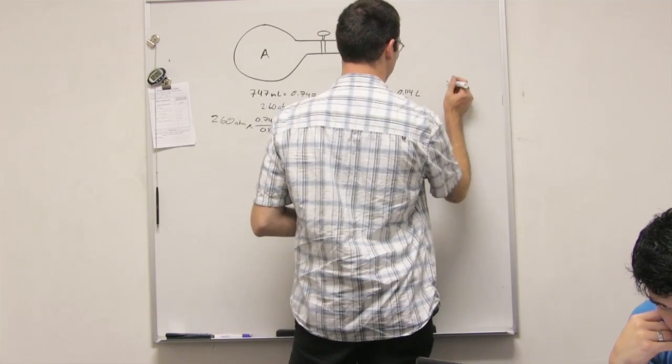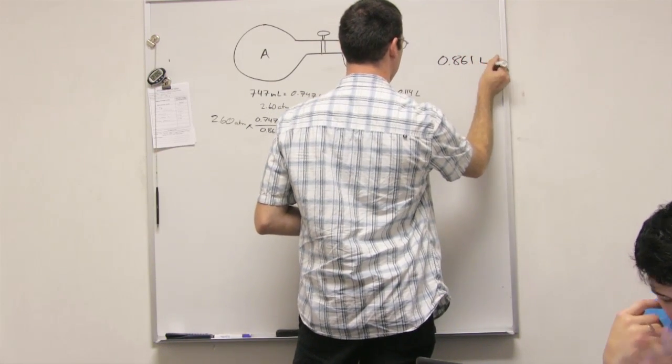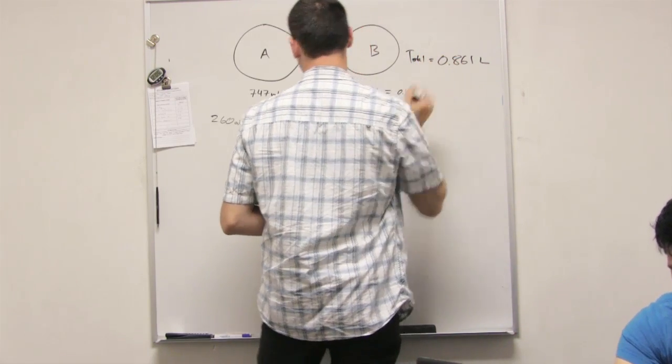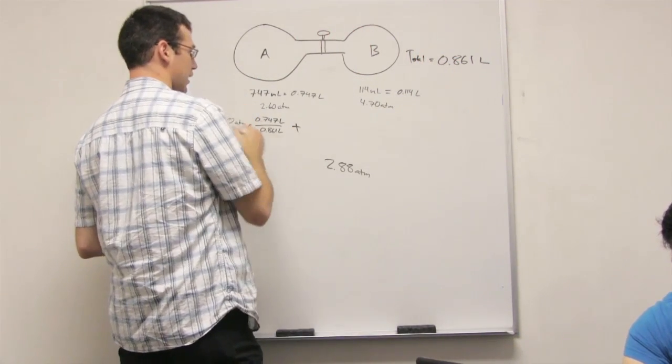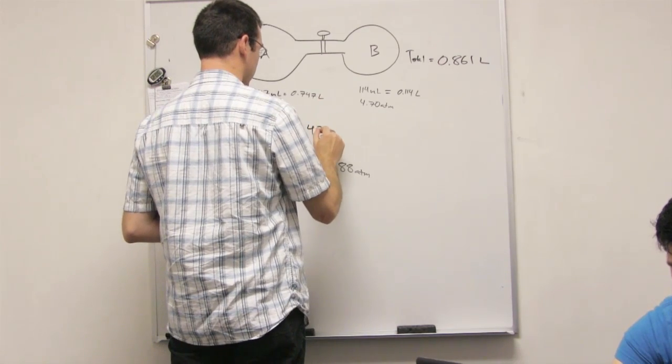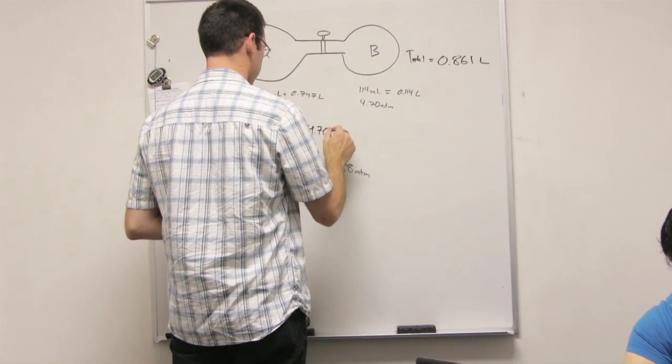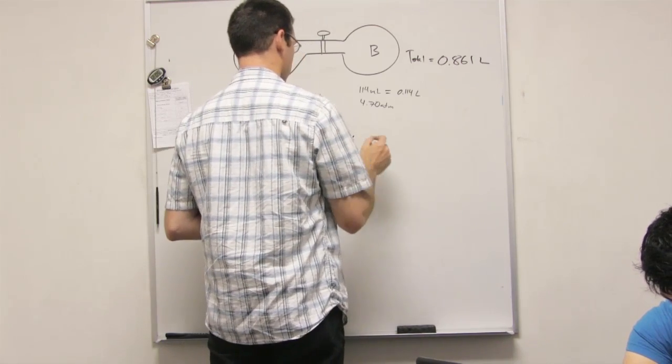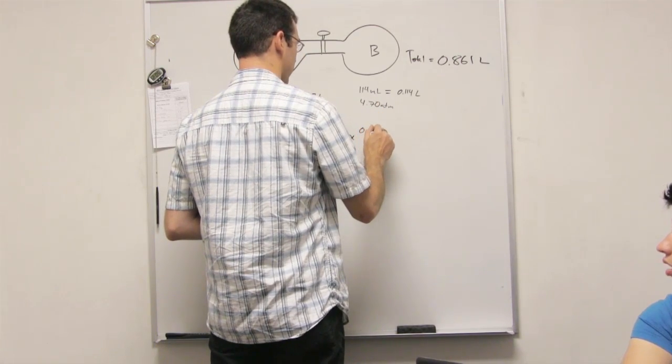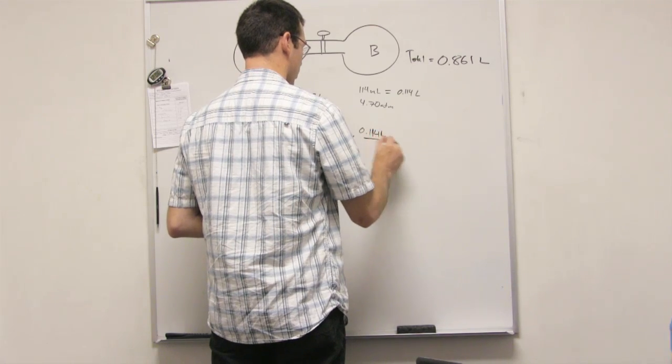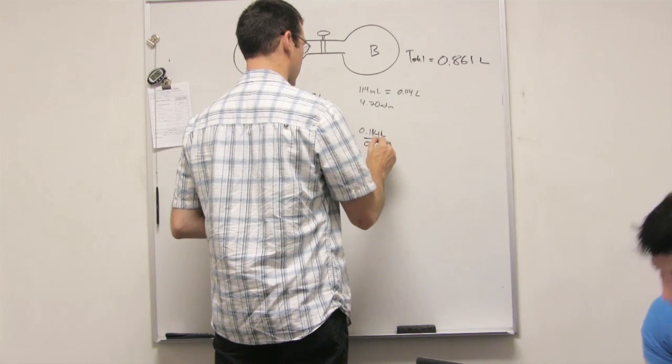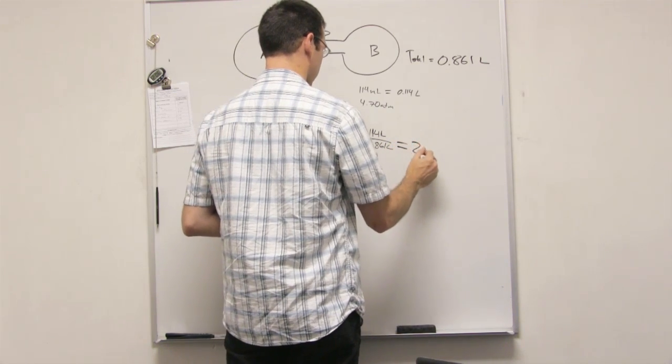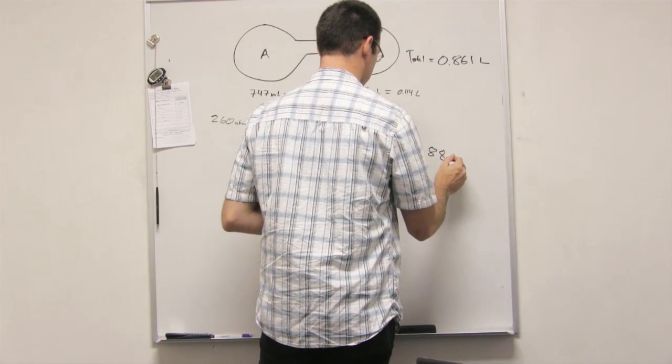So we'll put 0.861 liters for the total. And then we had to add the 4.7 atmospheres times the 0.114 liters over the 0.861 liters, and I got 2.8 atmospheres.